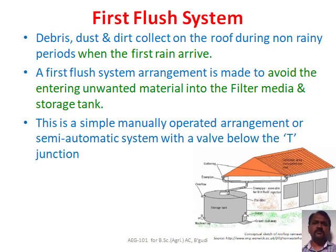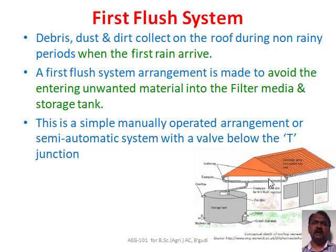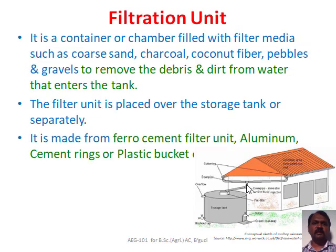The first flush system ensures that the first rainfall water, which carries debris, dust, and dirt, is cleaned and removed before reaching the storage tank. This first flush system is an arrangement made to avoid unwanted material entering the filter media and storage tank. It is a simple manually operated or semi-automatic system with a valve below the T-junction.